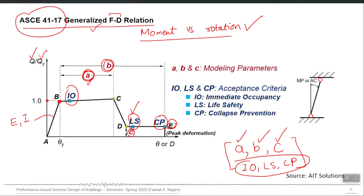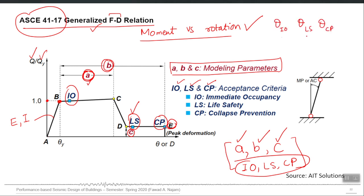ASCE 41 provides the template of the force-deformation behavior and you only need small a, small b, small c, and the yield capacity to plot the curve. You then mark IO, LS, and CP on that curve, and that is what is required for defining a plastic hinge. Small a, small b, and small c are called modeling parameters, and the rotations corresponding to IO, LS, and CP are called acceptance criteria. These will be in the form of radians. So theta-IO, theta-LS, and theta-CP are the three acceptance criteria numbers, which also come from ASCE 41 tables.